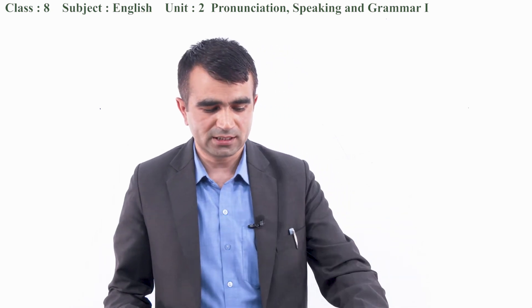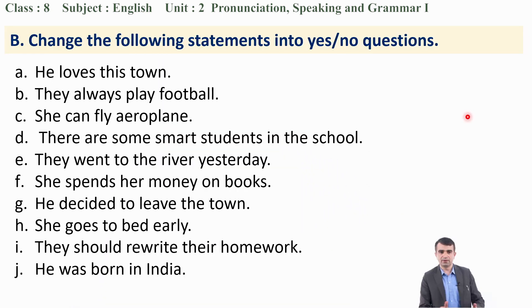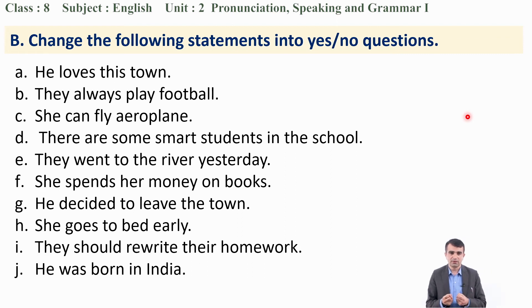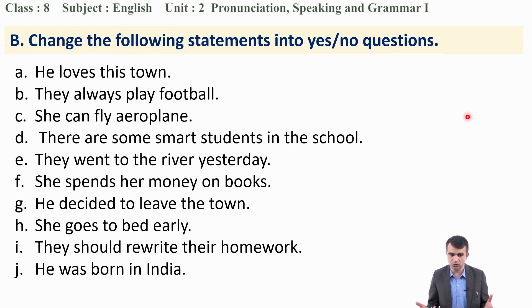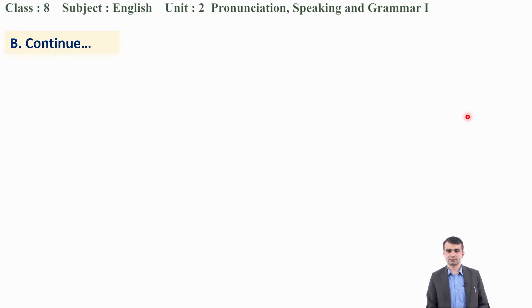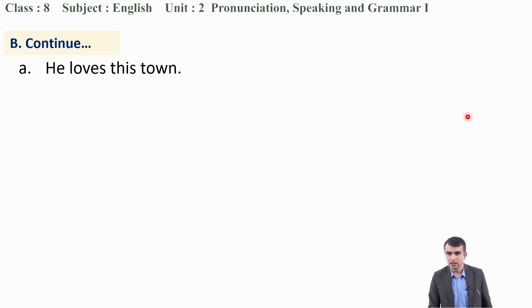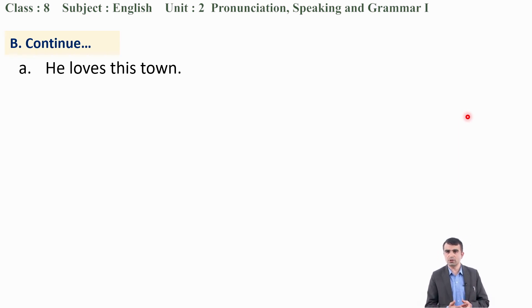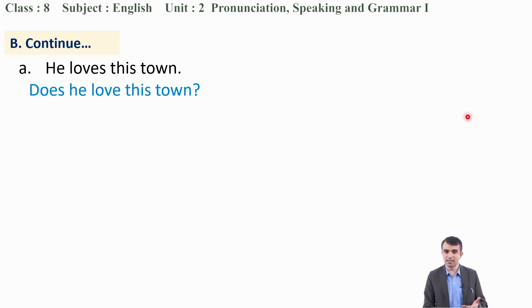Now do some practice. Change the following statements into yes/no questions. First: 'He loves this town.' The verb has an S/ES inflection, so use 'does': 'Does he love this town?' B: 'They always play football' — just add 'do' at the beginning: 'Do they always play football?' C: 'She can fly an airplane' — 'Can she fly an airplane?'